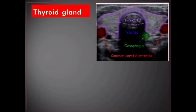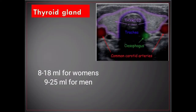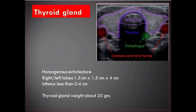Thyroid gland. The normal thyroid gland has a smooth contour; the echo pattern of the parenchyma is homogeneous and hyperechoic compared with surrounding muscles. In the longitudinal plane, the craniocaudal diameter is measured from upper to lower pole; in the transverse plane, the maximum width and depth are determined. The two thyroid lobes are measured separately, volumes calculated and added together. Normal total thyroid volume in adults is 8 to 18 milliliters for women and 9 to 25 milliliters for men. Each lobe measures 1.5 centimeters across by 4 centimeters, and the isthmus is less than 0.4 centimeters. Total thyroid weight is about 20 grams.